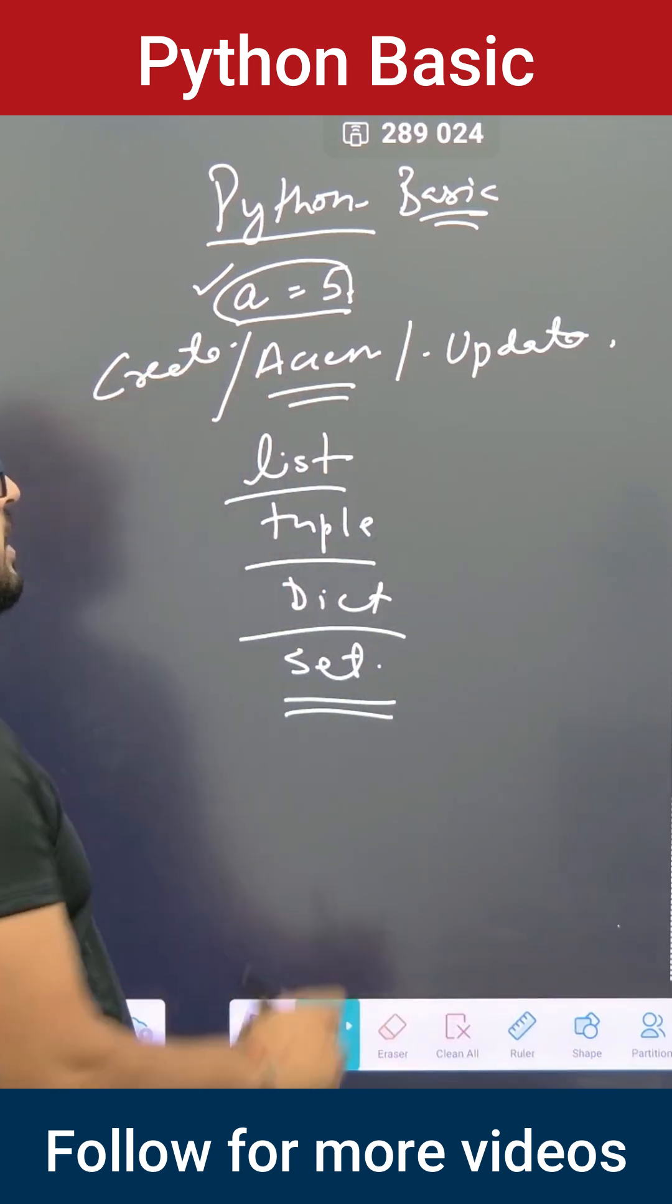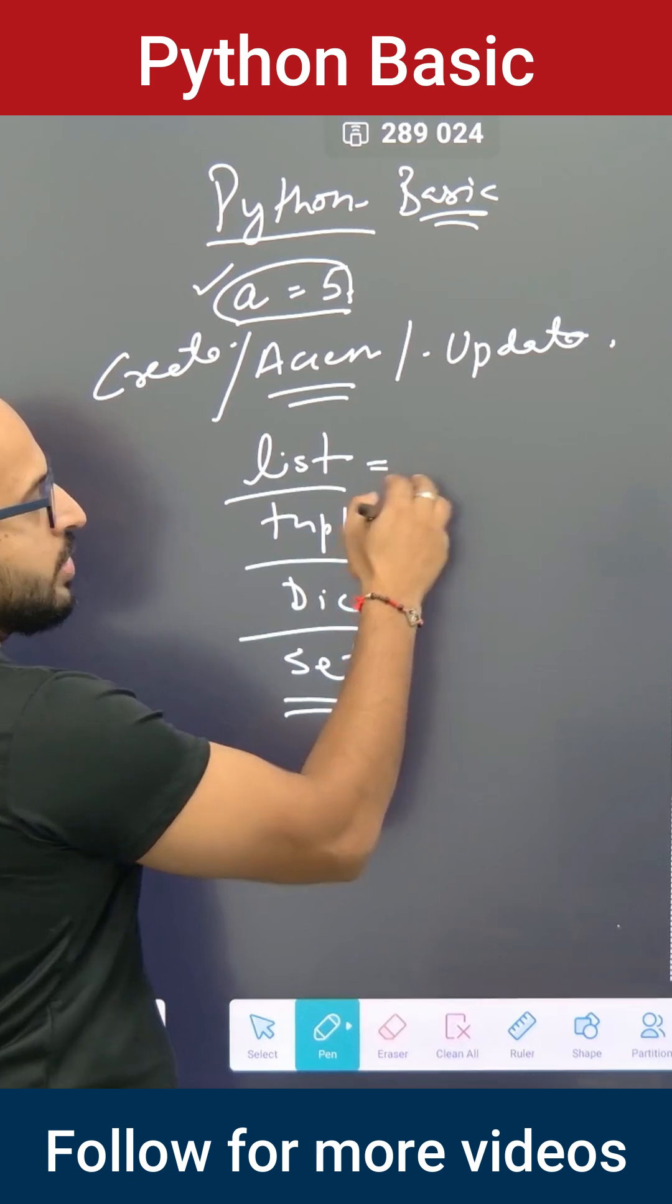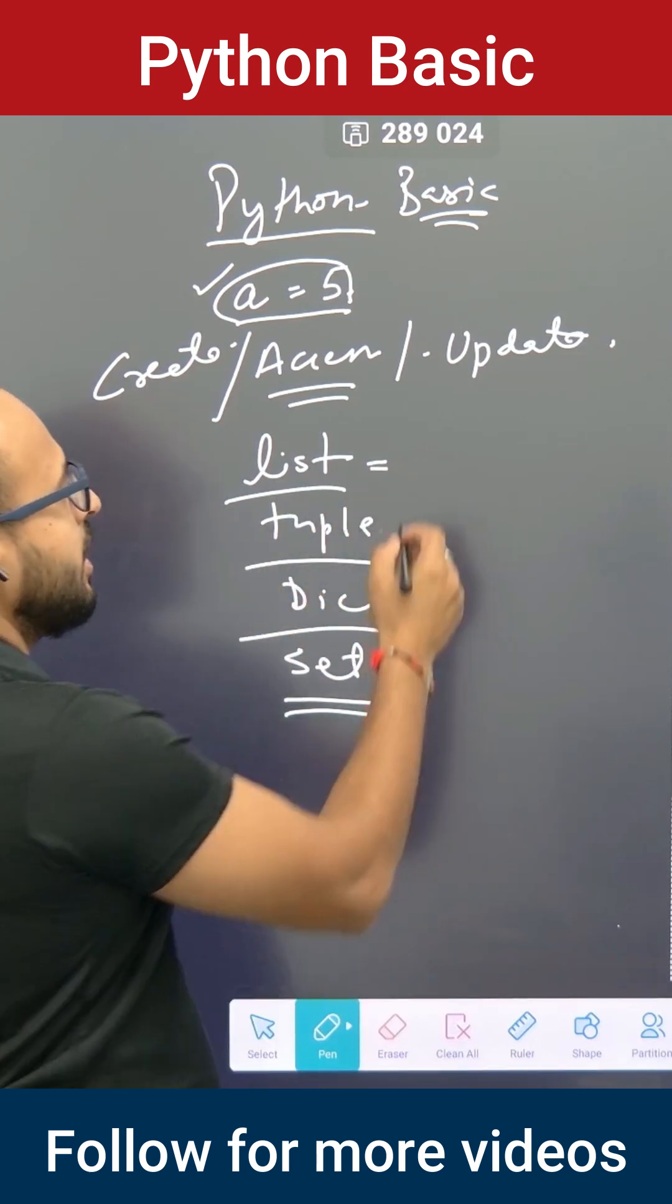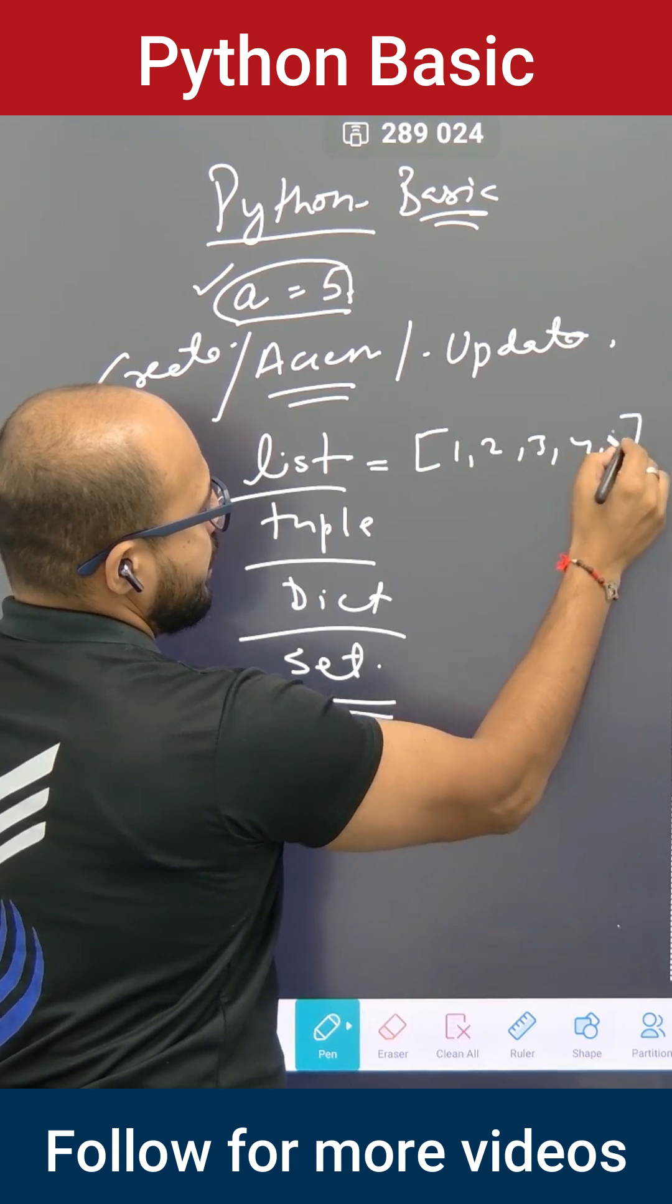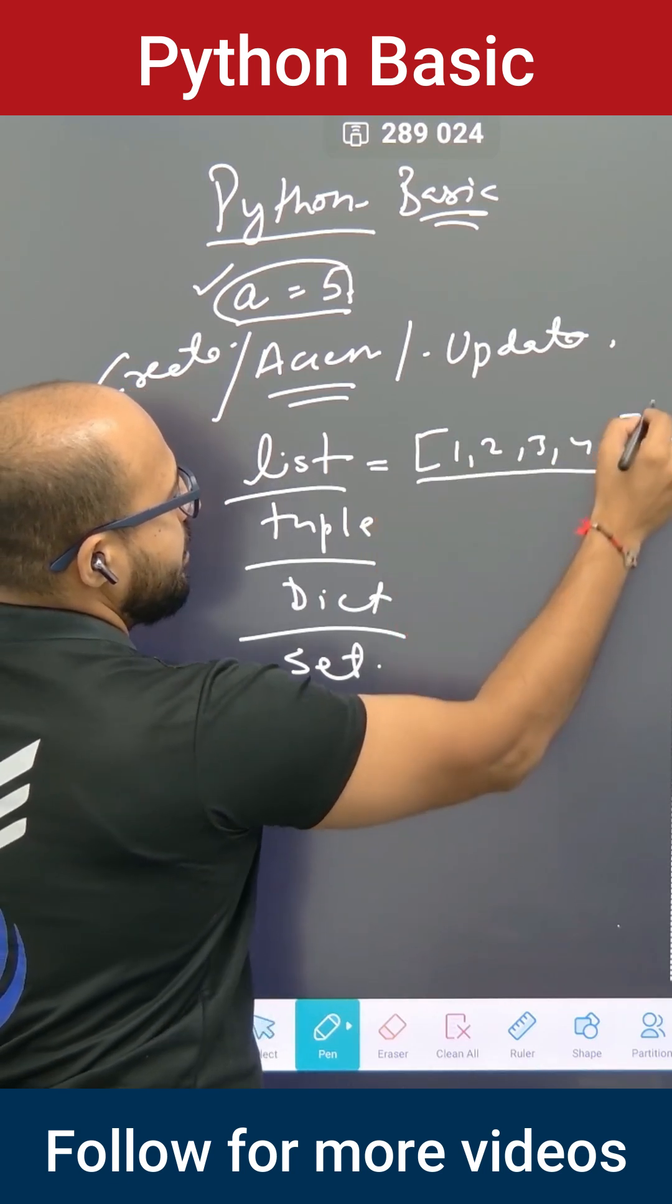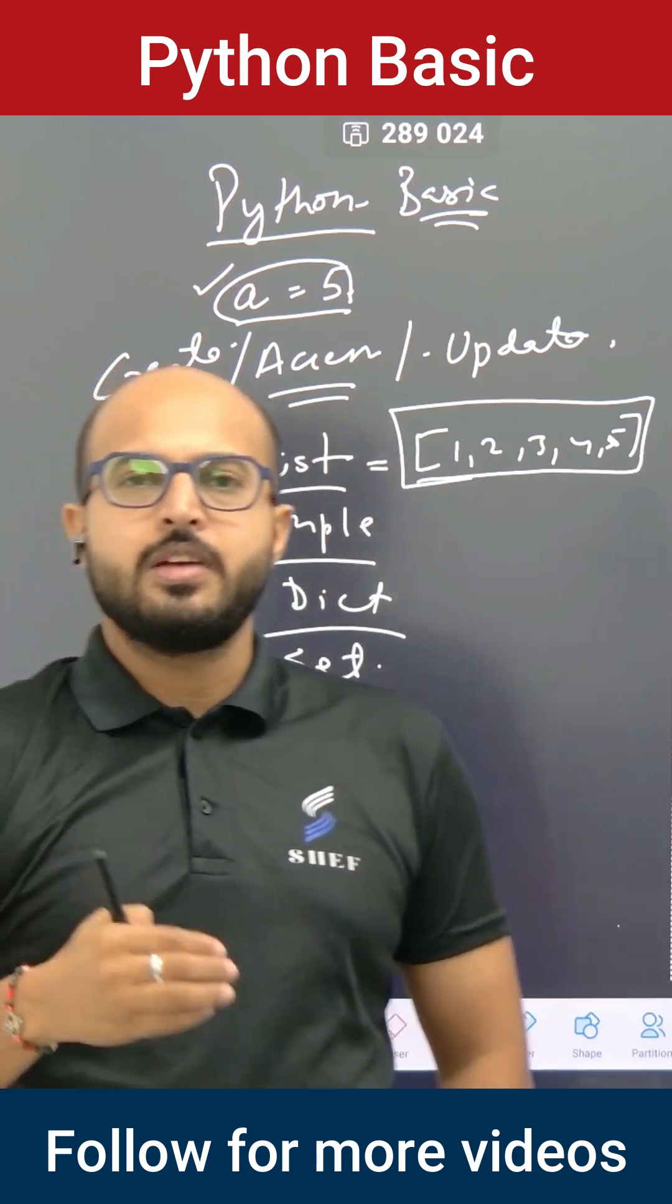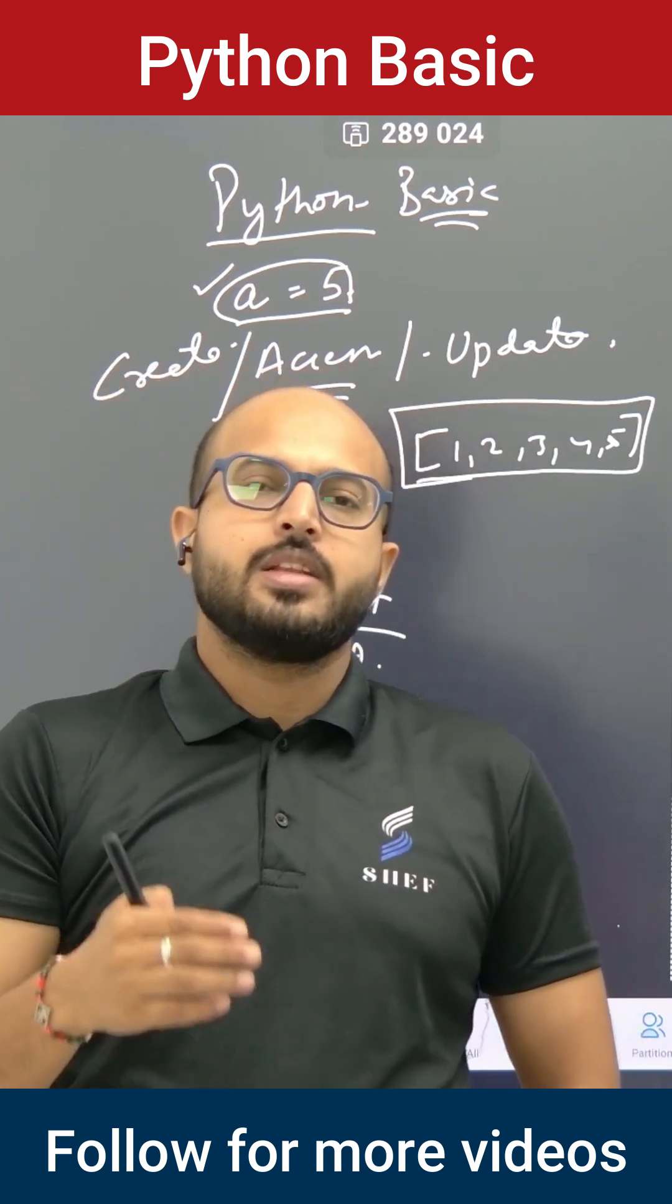If I say about this list, suppose I'm defining the list as a set of numbers like 1, 2, 3, 4, 5. As you can say, I am creating a list. Once I have created a list, then after that I will access this list, and then I will update it.